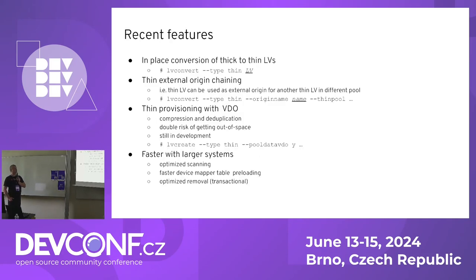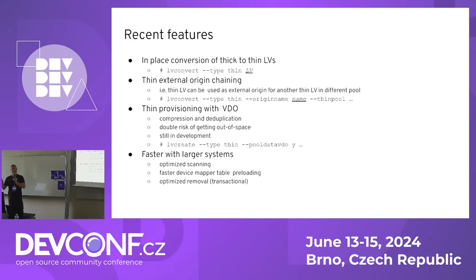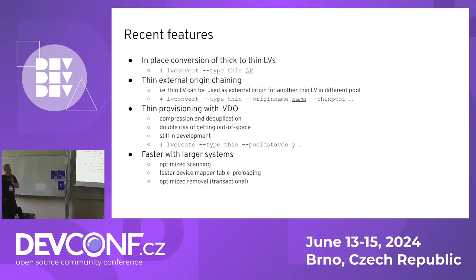A couple of words about recent features. Thin provisioning has been enhanced with the possibility to use any LV as a Thin. The conversion happens by making a Thin pool from a volume, and on top of that you will have your Thin LV — there is no copying, it's instant and easy to use. External origins are probably something for users of thin provisioning — take note and ask me later if you want details, it's a great topic but we don't have time.